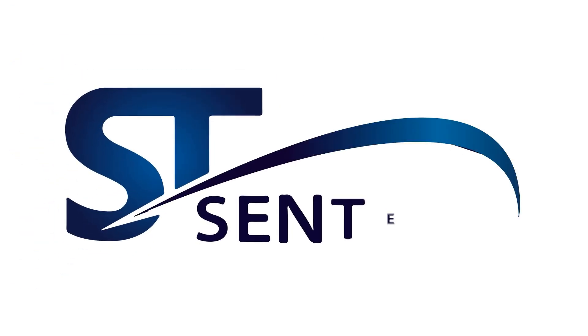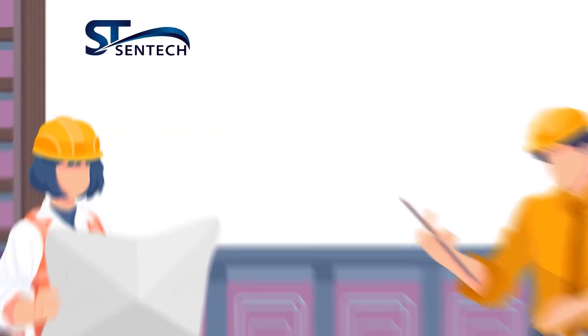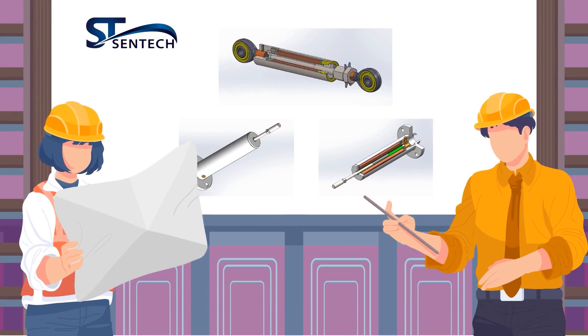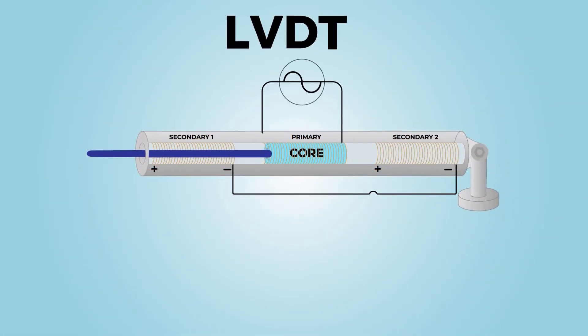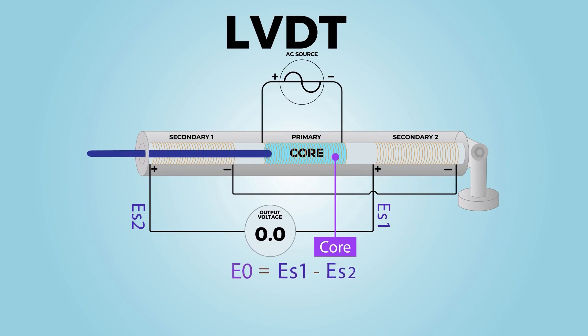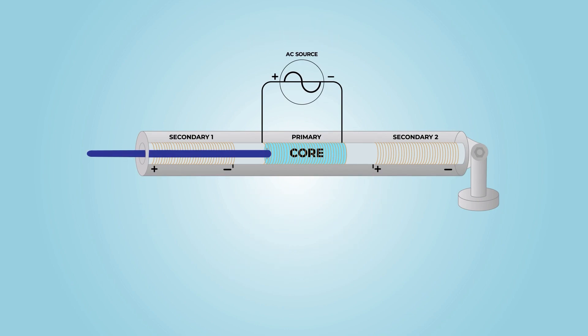Let's begin by familiarizing ourselves with the key terminology associated with linear variable differential transformers. An LVDT is a common type of electromechanical transducer which is used to convert the linear motion of an object to which it is attached into a proportional electrical signal.